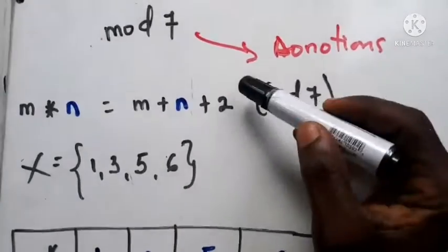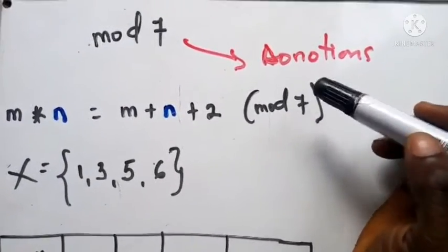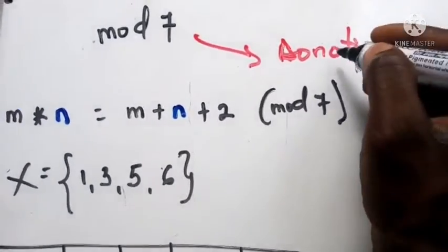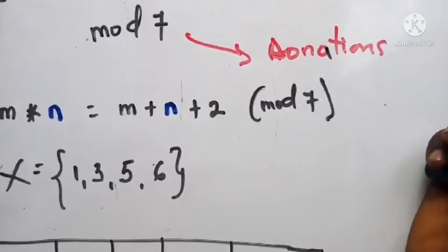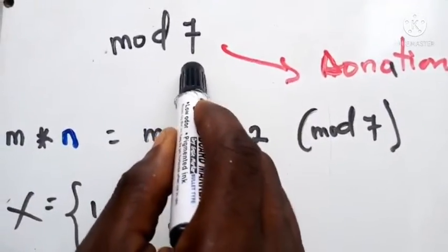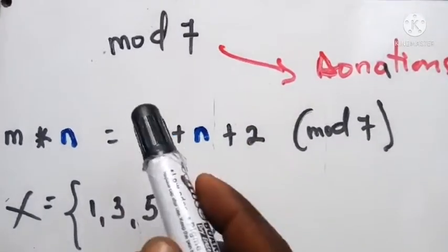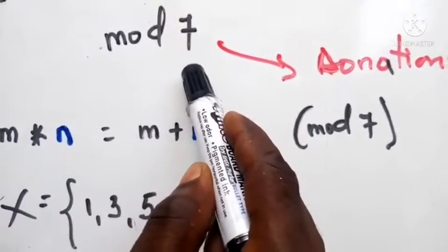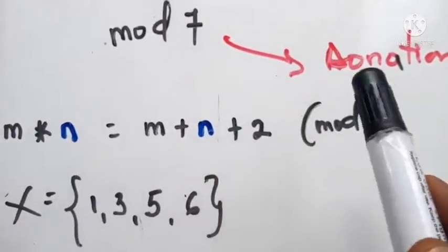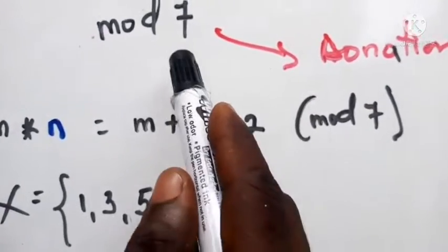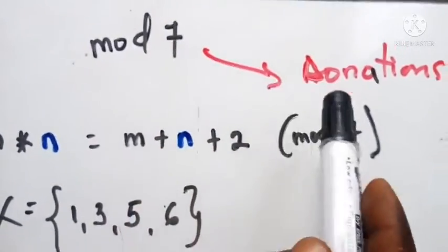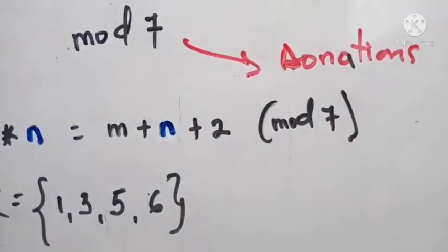To understand the concept of modulo arithmetic, let's use the idea of donations. In mod 7, you only donate seven dollars — that is the only amount you give. You don't give anything more than seven and you don't give anything less than seven. That is the idea, just for understanding.